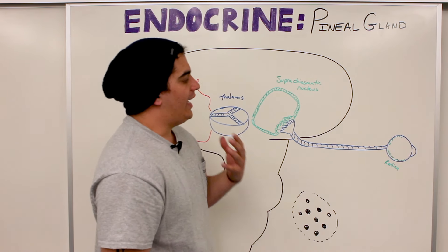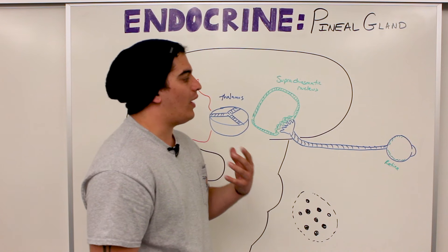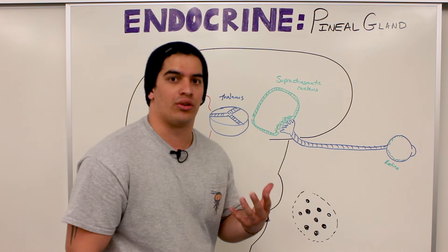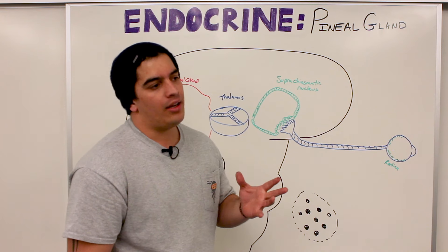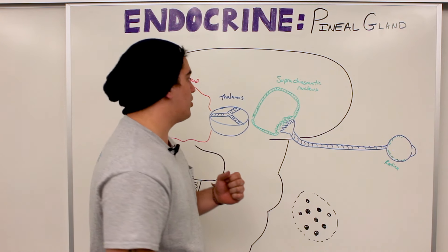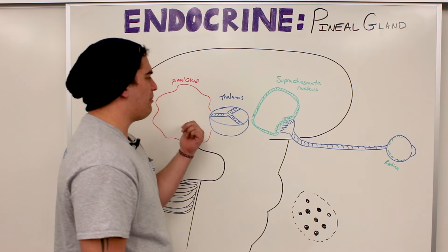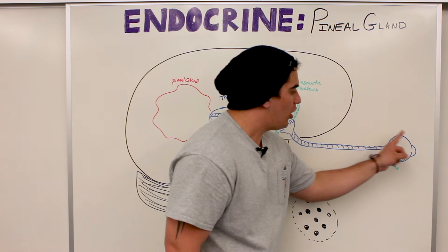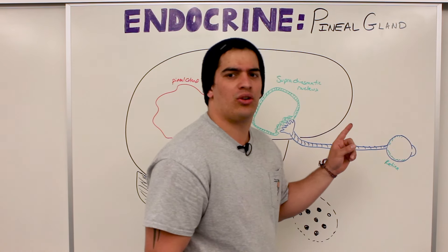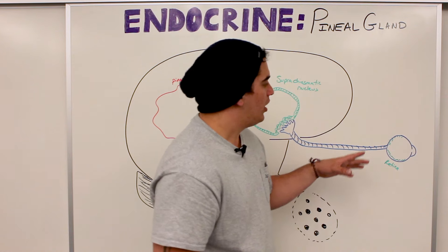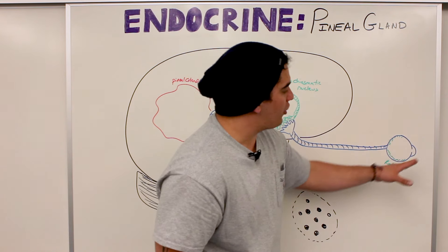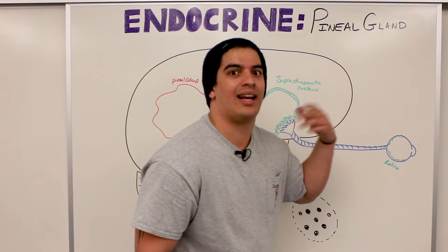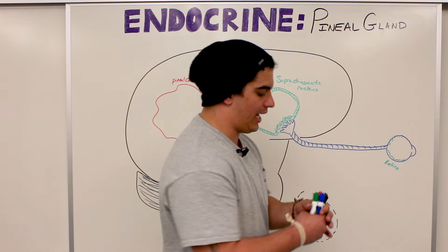What is the pineal gland's function? Its function is to regulate our sleep and wake cycles — our diurnal cycles. It also plays other roles we'll discuss. They also call the pineal gland the 'third eye.' Why? Because the eye has a direct — or rather indirect — connection to the pineal gland.